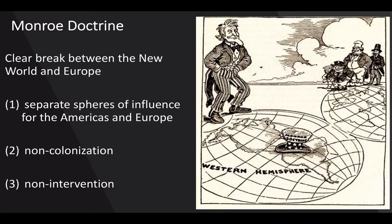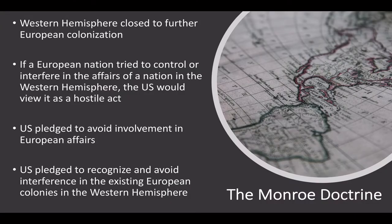President Monroe outlined three main concepts of the doctrine designed to signify a clear break between the New World and Europe. One: separate spheres of influence for the Americas and Europe. Two: non-colonization. And three: non-intervention. The Western Hemisphere was henceforth closed to further European colonization. The independent lands of the Western Hemisphere would be solely the domain of the United States. If a European nation tried to control or interfere in a Western Hemisphere nation's affairs, the United States would view it as a hostile act. In exchange, the United States pledged to avoid involvement in European affairs and to recognize existing European colonies in the Western Hemisphere.